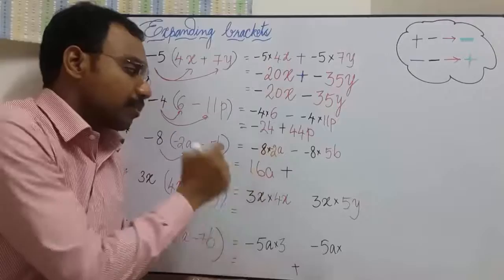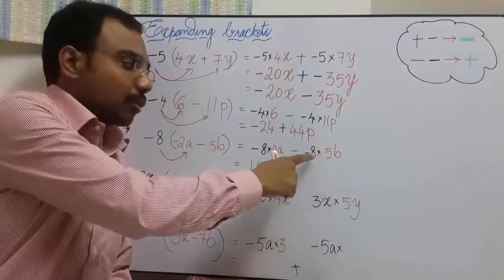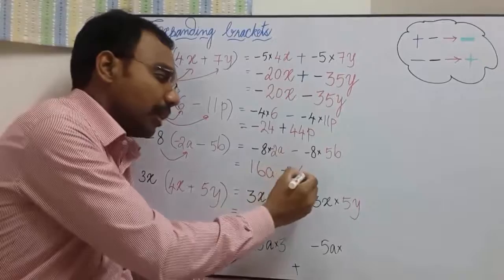And whenever you see two negative signs together, you can make it as positive. Negative 8 into 5 is negative 40. So the subtraction of negative 40 is same as adding 40b.